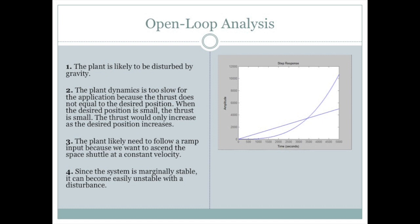Until the output line will catch up the input line until 3500 seconds, but we want the output to catch up input at 170 seconds, so we decided the plant dynamics is too slow for our application. We also want the Space Shuttle to move at a constant speed, so we pick ramp as our input.